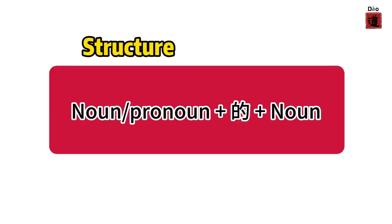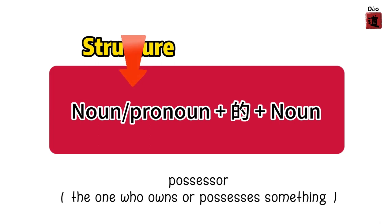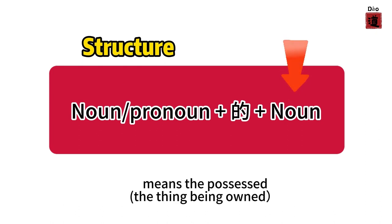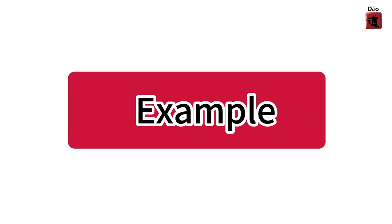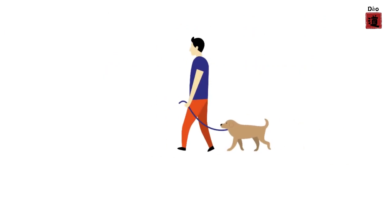The noun before 的 means the possessor — the one who owns or possesses something. The noun after 的 means the possessed — the thing being owned. This is the noun structure that 的 is used to emphasize. Let's read an example: who is this?